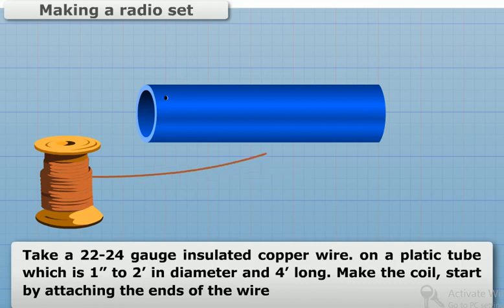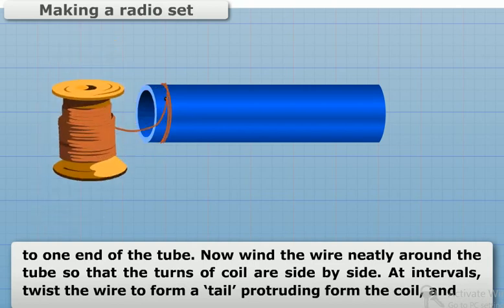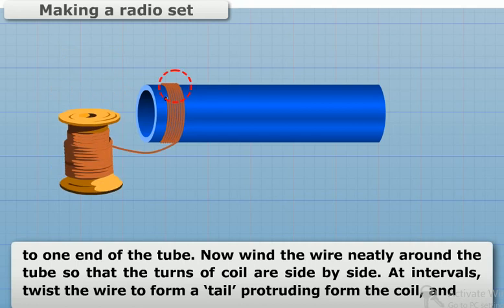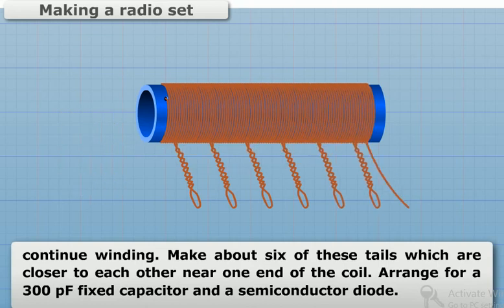Make the coil start by attaching the ends of the wire to one end of the tube. Now wind the wire neatly around the tube so that the turns of the coil are side by side. At intervals, twist the wire to form a tail protruding from the coil and continue winding. Make about six of these tails which are closer to each other near one end of the coil.